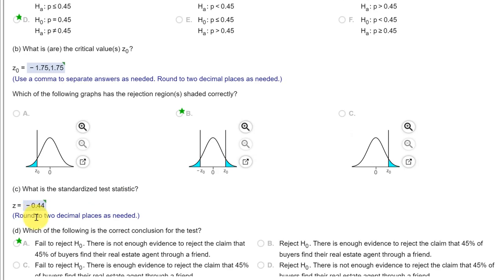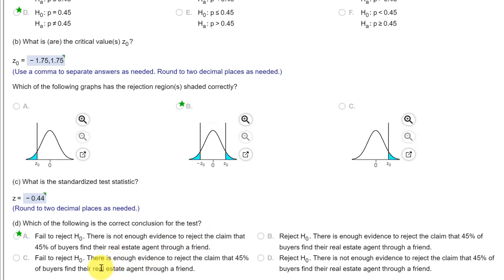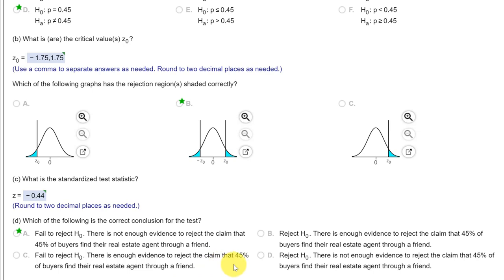The last part is to draw a conclusion. Now we know we failed to reject and there's two options here that have failed to reject. The first says there's not enough evidence to reject the claim. The other says there is enough evidence to reject the claim. Well we know that the null is the claim. The second one was trying to confuse you to think about the alternative, but the null is the claim and there is not enough evidence to reject the claim that 45% of buyers find the real estate agents.